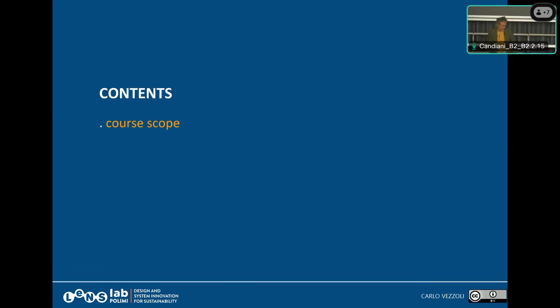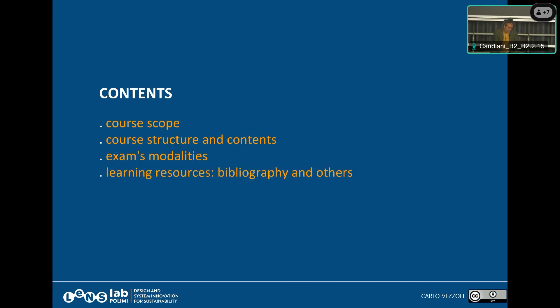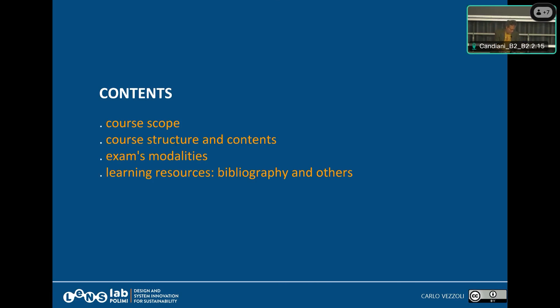The content of this first part covers the scope of the course, the course structure and content, the exam modalities, and the learning resources. We have two books for this course — they are open access, so you can download them for free. We also have other learning resources online, and a few other pieces of information.